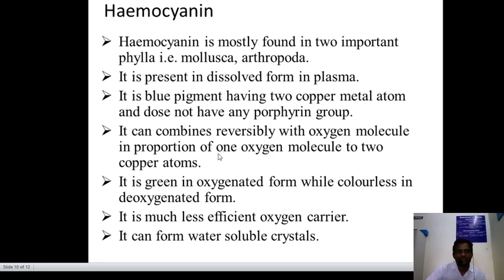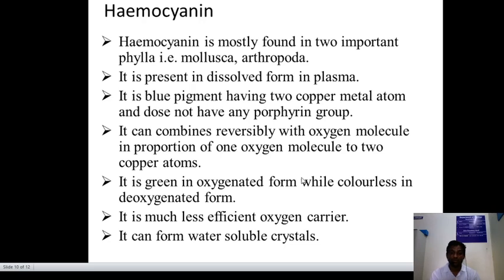The third respiratory pigment is hemocyanin, mostly found in two important phyla: Mollusca and Arthropoda. It is present in dissolved form in plasma. It is a blue pigment containing two copper metal atoms and does not have any porphyrin group. It can combine reversibly with oxygen molecules — one oxygen molecule per two copper atoms. It is blue in oxygenated form and colorless in deoxygenated form. It is a much less efficient oxygen carrier and can form water-soluble systems.